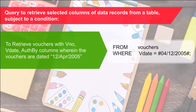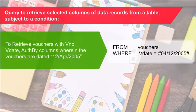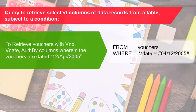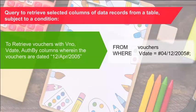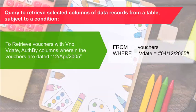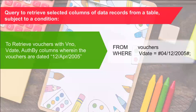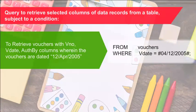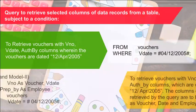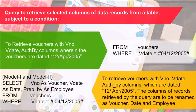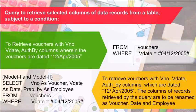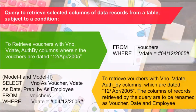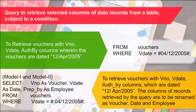Query to retrieve selected columns of data records from a table subject to a condition: 1. To retrieve vouchers with voucher number, V-date, and authorized-by columns wherein the vouchers are dated 12th April 2005. 2. To retrieve vouchers with voucher number, V-date, and authorized-by columns which are dated 12th January and April 2005.